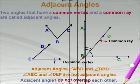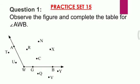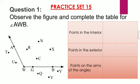Now let's move to Practice Set 15. Question 1: Observe the figure and complete the table for angle AWB. First, find the points in the interior. Interior means inside, so the interior points are point R, point N, point X, and point C.